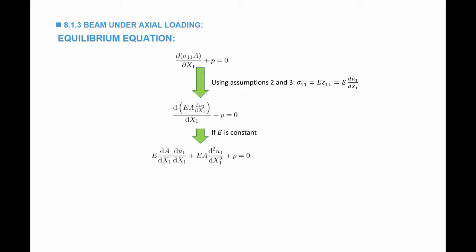If E is constant, we can take E outside the differentiation. If the cross-sectional area A also varies with position, the general equation applies. If A is also constant, the first term is zero because the rate of change of A with respect to x1 is zero, leaving: EA times the second derivative of u1 with respect to x1 plus p equals zero. This is a straightforward equation; it can be solved if you have two boundary conditions for the displacement.